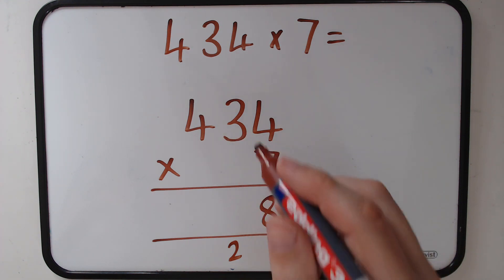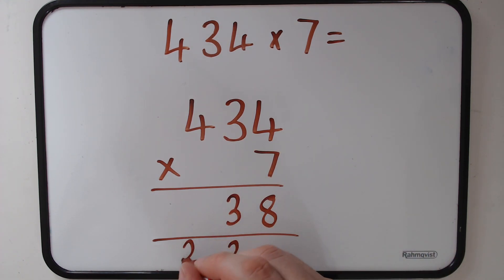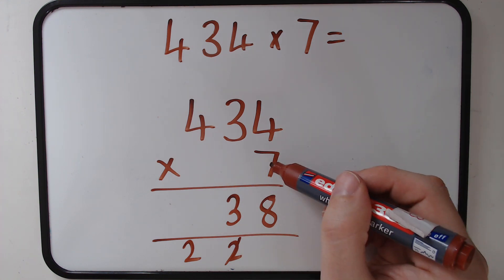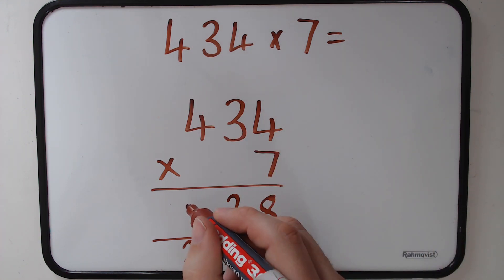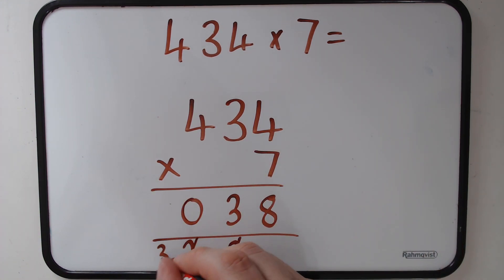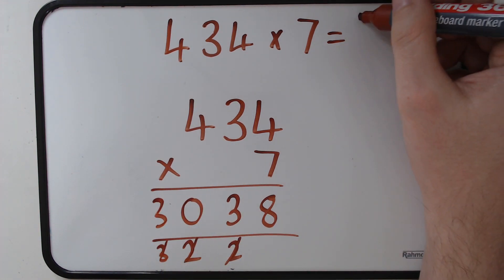Then we do 7 lots of 3, which is 21. Add the 2 underneath makes 23, so 2 goes into the hundreds. 7 times 4 is 28, add the 2 makes 30. We can put the 3 under the thousands and bring it back up, and our answer is 3038.